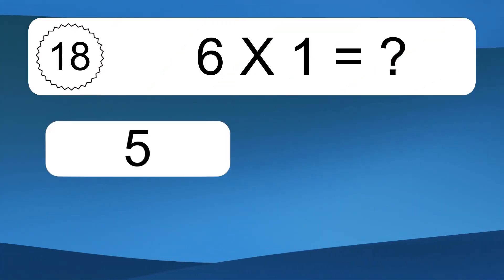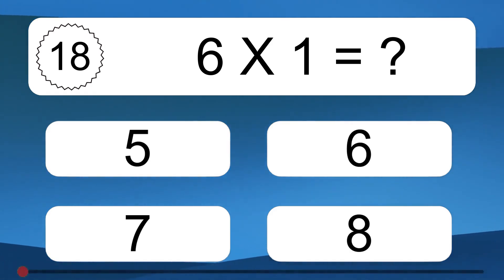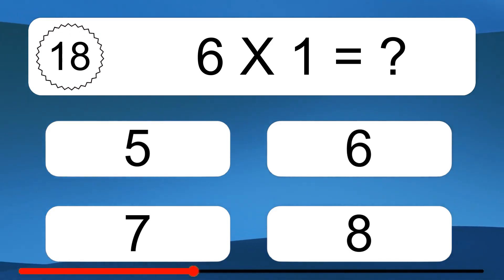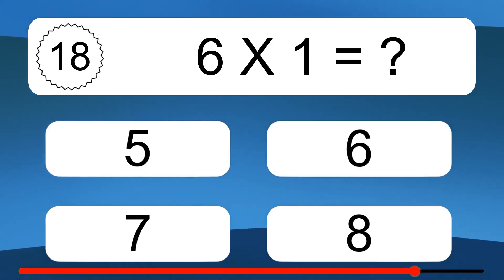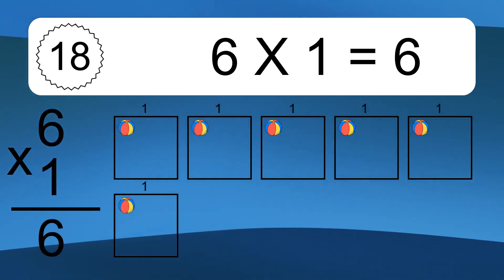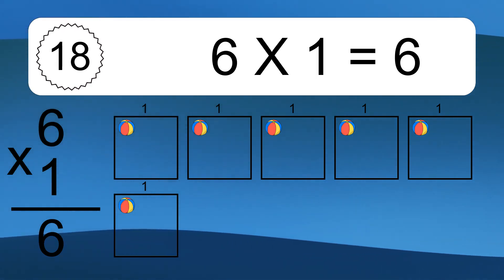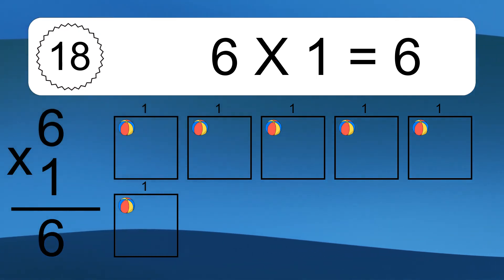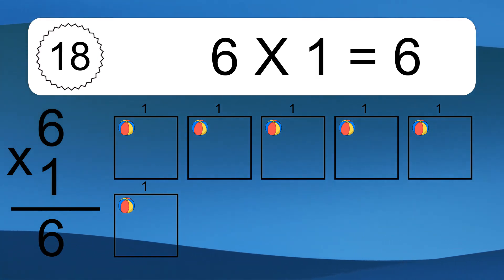6 times 1 equals what? 6 times 1 equals 6. We have 6 boxes and each box has 1 colorful ball inside. If you count all the balls in all the boxes together, you will have 6 times 1 balls. This equals 6 balls.